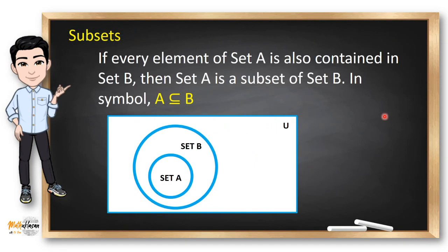When learning about sets, it's very important to know about subsets. If every element of set A is also contained in set B, then set A is a subset of set B. In symbol, A is a subset of B. Notice that if we represent this in a Venn diagram, set A is a small circle inside set B, because all the elements of set A are also elements of set B.